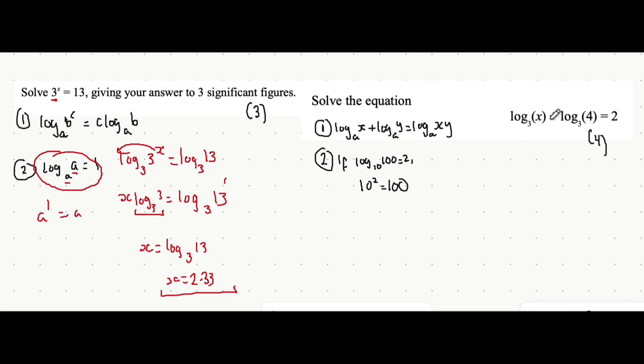So here, because we're adding two different logarithms, we can multiply what's inside of the two logarithms, keeping the base the same. So we can say that's log base 3 of x times 4, or 4x, is all equal to 2.